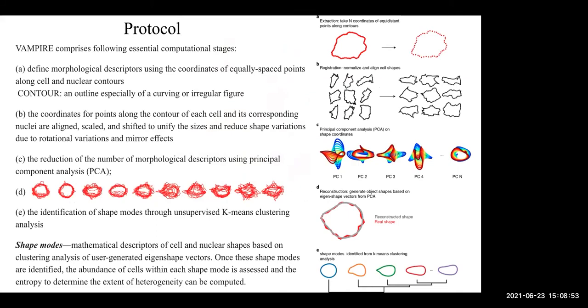The major computational steps in the software are: first, equally spaced coordinates along the contours of the cell are extracted. Then these extracted shapes from the coordinates are normalized. The normalization of the shape is to get rid of the drifts from size variations and mirror effects or rotational variations, like the same cell that when rotated can look different in shape, different in the structure, right? All those are normalized and you get the final normalized shapes here.